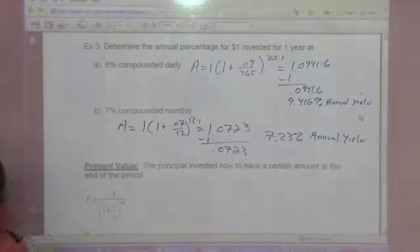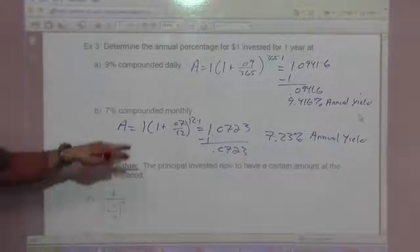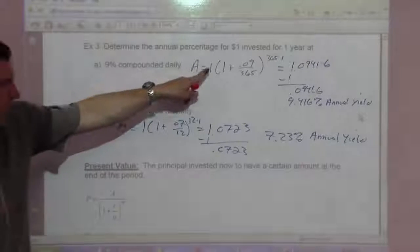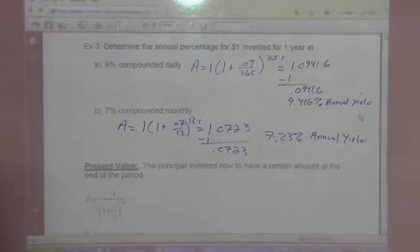Present value. The principal invested now to have a certain amount at the end of the period. So really it's our formula if we solve for P. It's the amount divided by 1 plus R over N to the N T power.